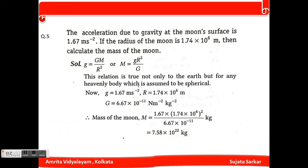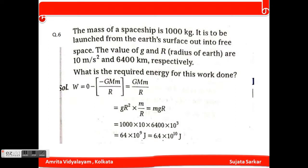The mass of a spaceship is 1000 kg. It is to be launched from the earth's surface out into free space. The value of g and R (radius of earth) are 10 m/s² and 6400 kilometers respectively. What is the required energy for this work done? W equals 0 minus (-GMm/R), which equals GMm/R or gR² times m/R equals gRm. After putting the values we get 6.4 × 10¹⁰ Joules.